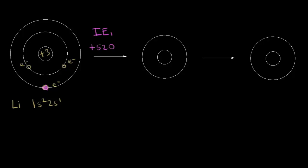Once we've pulled that electron away, we no longer have a neutral lithium atom. We would have a lithium ion, because we still have three positive charges in the nucleus but only two negative charges — only two electrons. Three minus two gives us plus one, so this is the lithium +1 cation, and the electron configuration would just be 1s2, because we lost the electron in the 2s orbital.